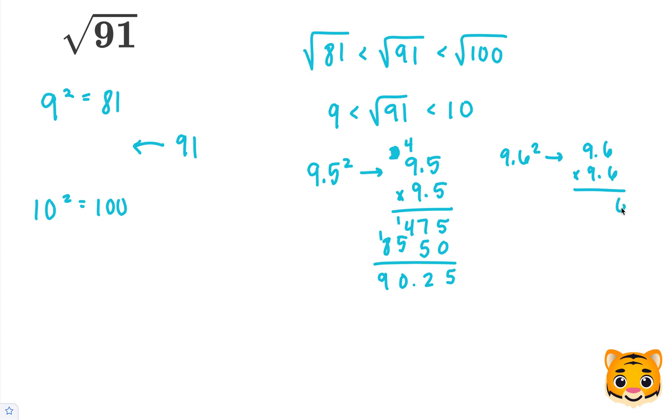6 times 6 is 36, carry the 3. 9 times 6 is 54, plus 3 is 57. Add our 0. 9 times 6 is 54, carry our 5. And then 9 times 9 is 81, plus 5 is 86. Now when we add these together, we end up getting 92.16.